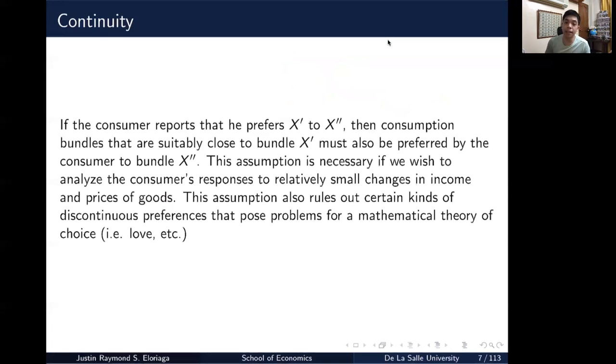This assumption is just necessary if you wish to analyze the consumer's responses to relatively small changes in income and prices, when we start to do differentiation and we start to derive these things using actual math. So this assumption also rules out certain kinds of discontinuous preferences that pose problems from our mathematical theory standpoint. Things like love, those things are kind of hard to model because there's likely discontinuities in there. So we'd like to have continuous preferences such that we can derive it at any point and get the values that we would want. So it's more a mathematical easing function.